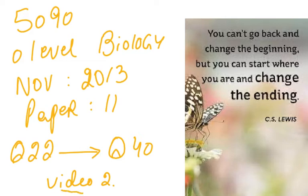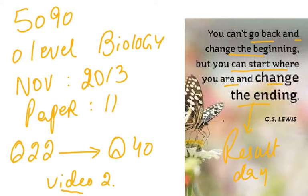Important that you read this. You can't go back and change the beginning, but you can start where you are and change the ending — specifically, your result day. You can work hard today, in these last few days before the exams, and change your result. Students getting a B can go into an A, and students getting a C can go into a B. It's not always the A's that matter; it's whether you can improve the grade you are presently getting.